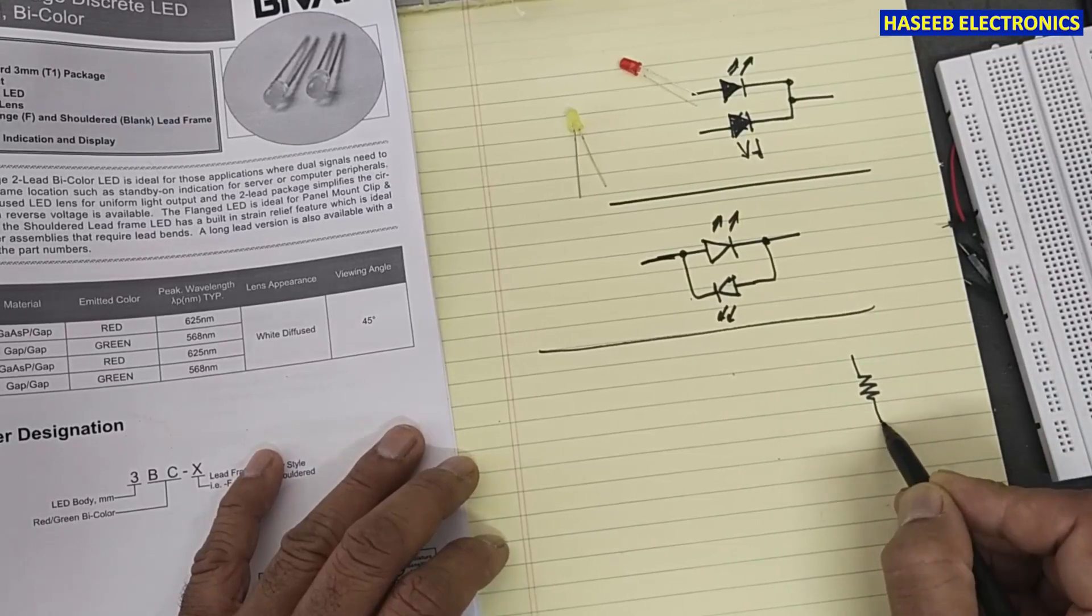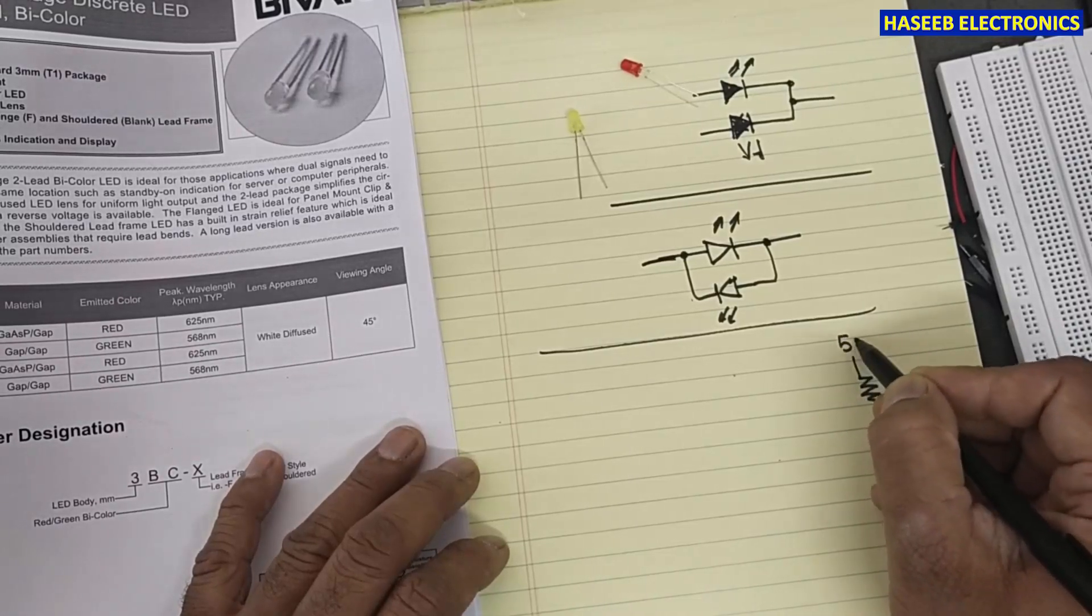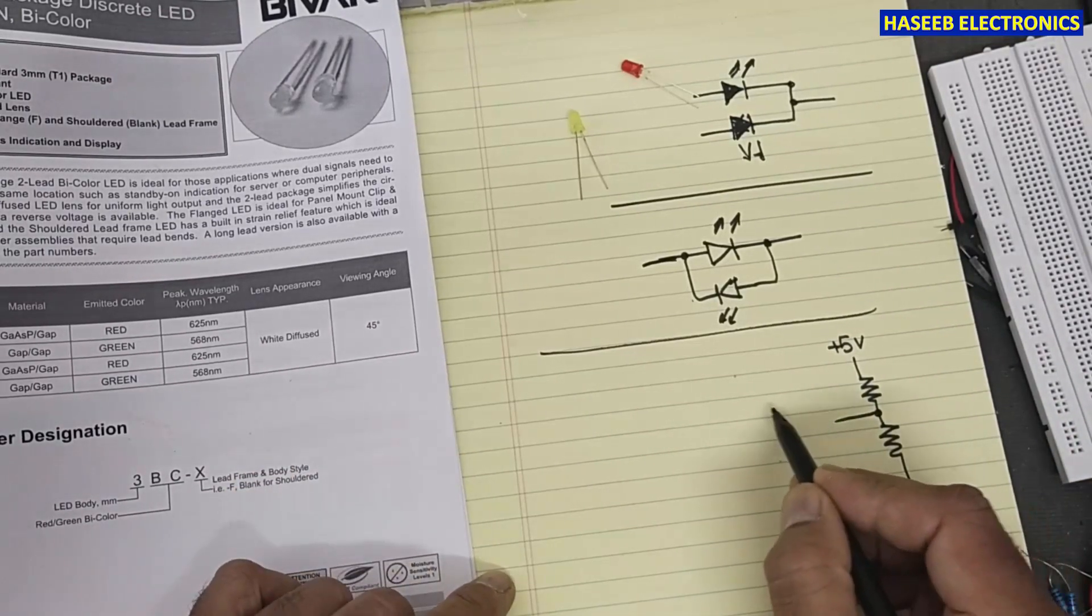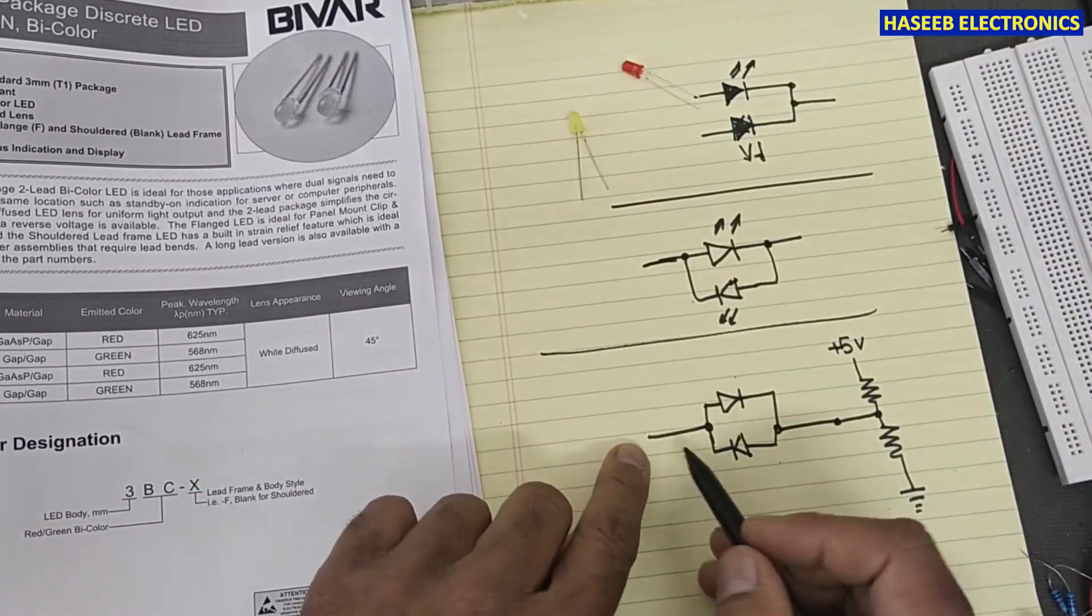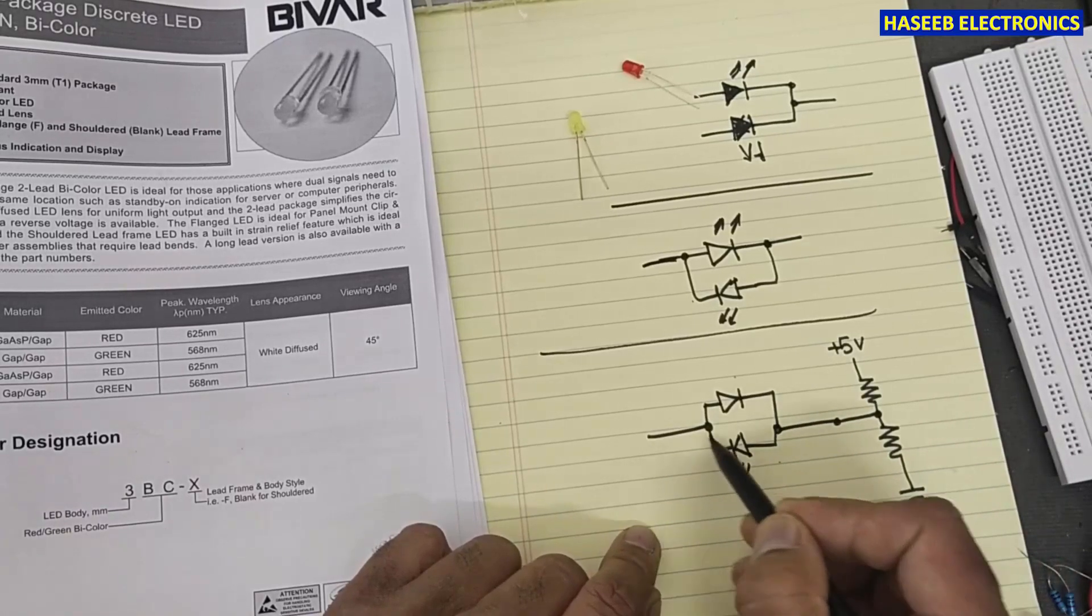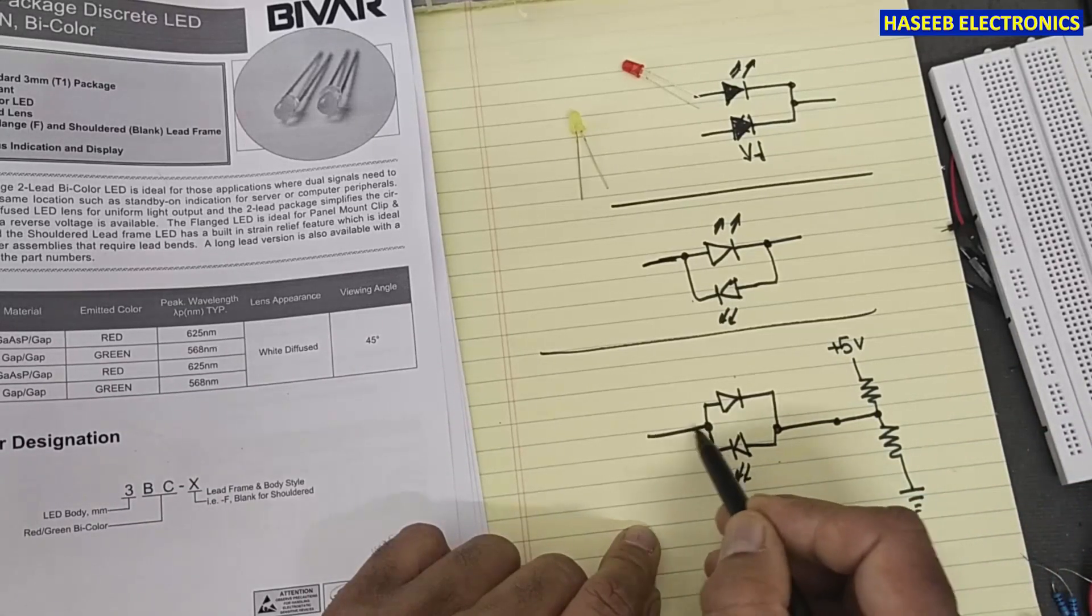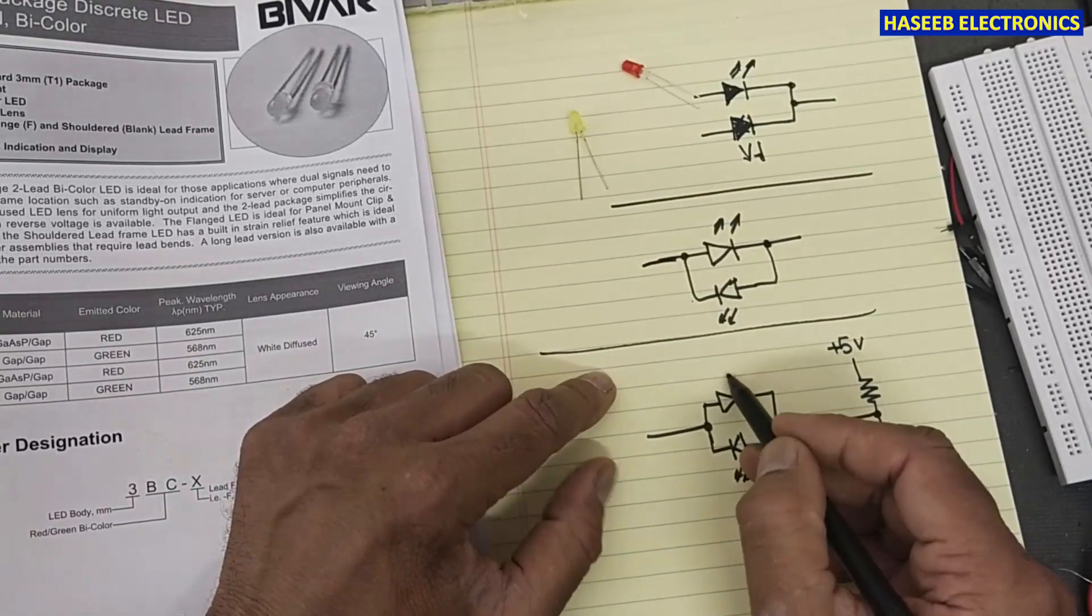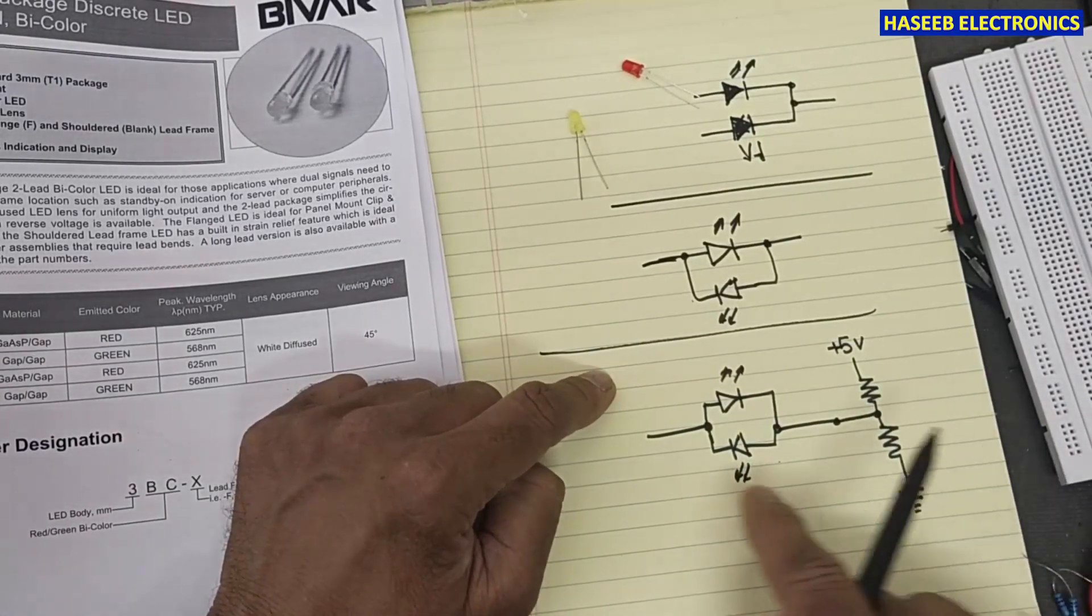There are two current-limiting resistors for this type of LED. For example, we are working with 5 volts. Most of the time it is used in 5-volt supplies. If this is connected to ground, low side return side, this LED will glow because positive voltage will reach this anode and return will take from here. If we connect to positive side, at that time this LED will glow and it will complete its path through this current-limiting resistor.